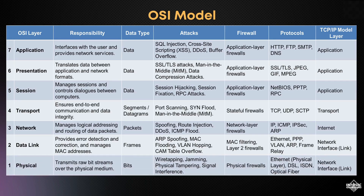Finally, we reach the physical layer, layer 1, which is responsible for transmitting raw bit streams over the physical medium, such as cables and wireless signals. This layer is vulnerable to physical threats like wiretapping and signal interference.